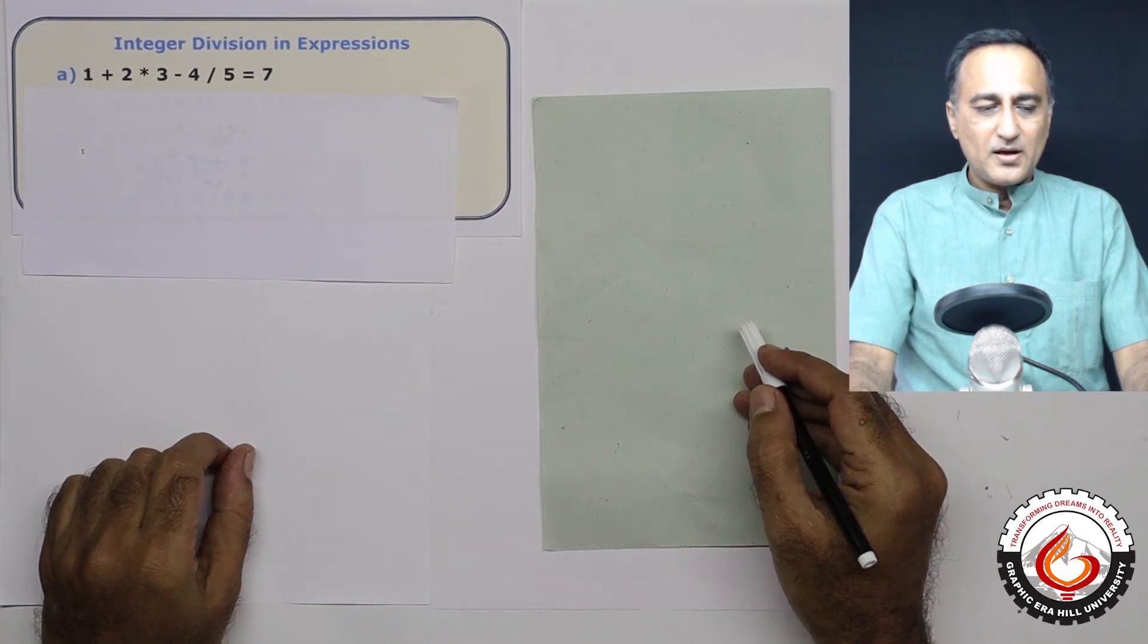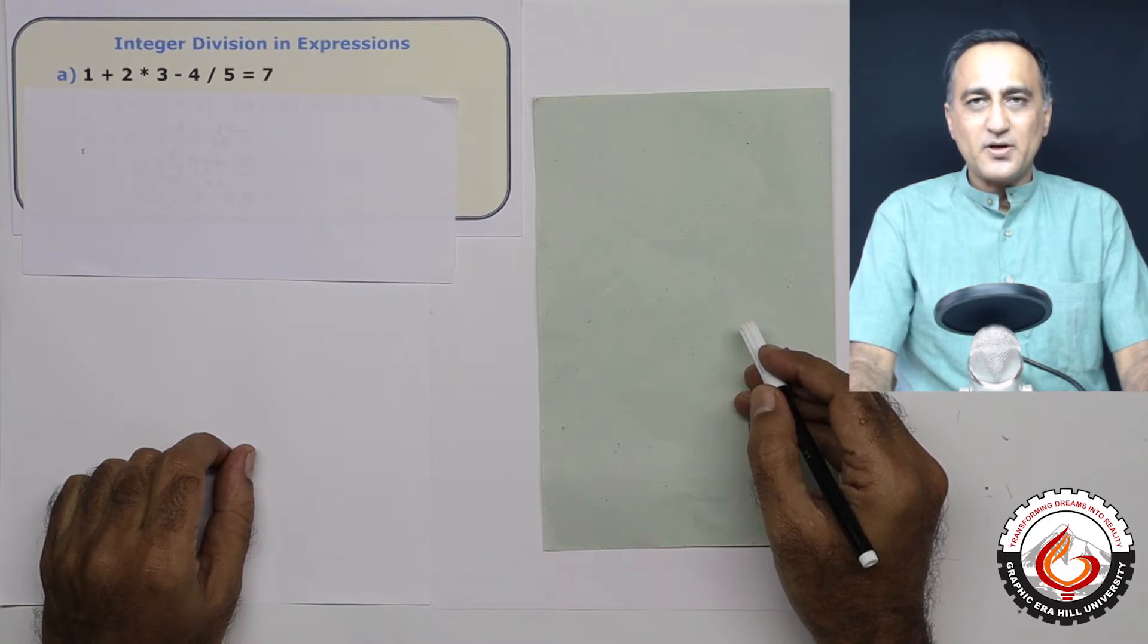Let us now take a look at how an expression is evaluated in C. Let's try to understand the difference between integer division and floating point division because it is so important and students frequently make mistakes in trying to understand this very simple concept.